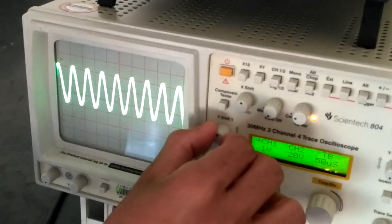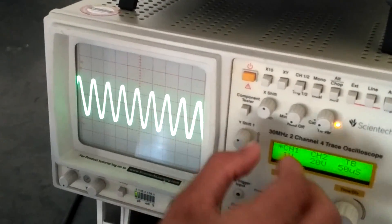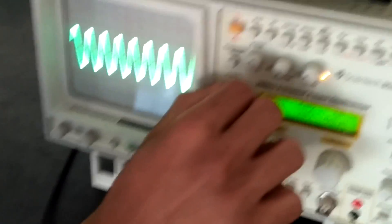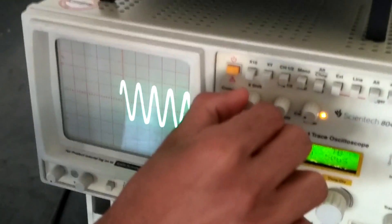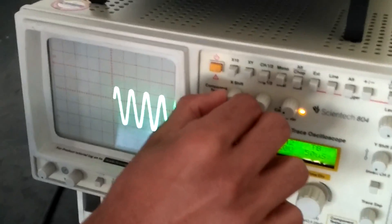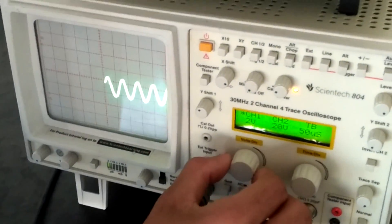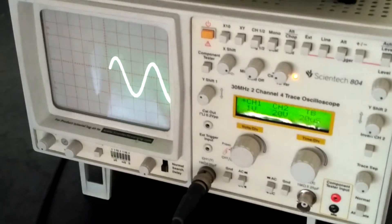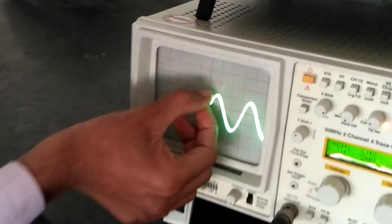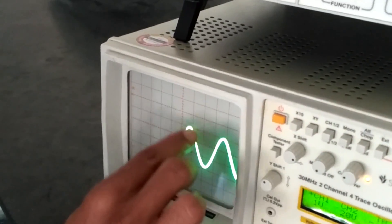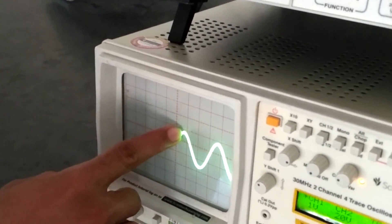Here we will measure the values. Since the wave is on one division, i.e. 1 volt, so the value of this waveform in the positive side is 1 volt.